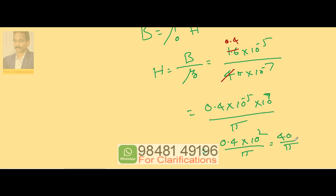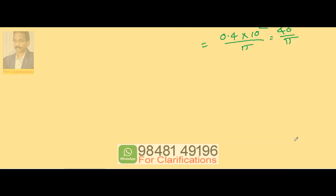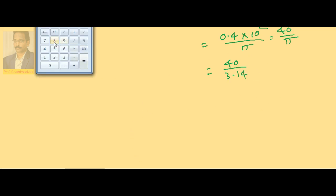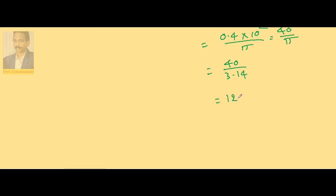40 by π, or 40 by 3.14. So 40 divided by 3.14, the value is 12.73 ampere per meter. This is the horizontal component of H, the magnetizing field strength.